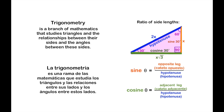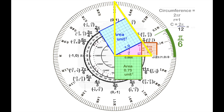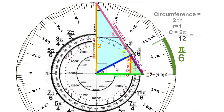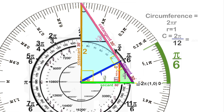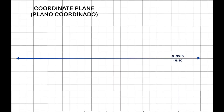Trigonometry is a branch of mathematics that studies triangles and the relationship between their sides and the angles between these sides. For a clear understanding of trigonometry, one must review some key basic concepts, beginning with the coordinate plane.